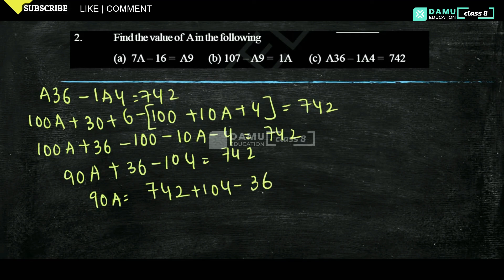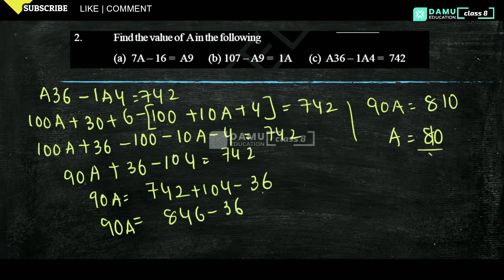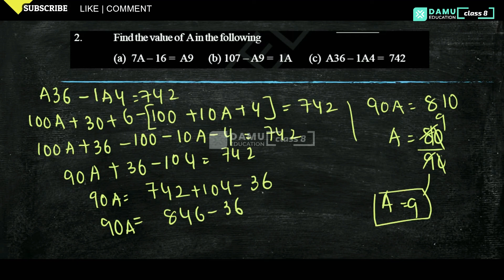So 90A equals 742 plus 104 minus 36. So 104 minus 36 gives 68, and 742 plus 68 is 810. Wait — 90A equals 846 minus 36, which is 810. Then A equals 810 by 90; cancelling zeros gives 81 by 9, so A equals 9.